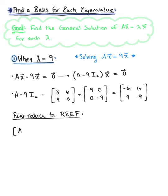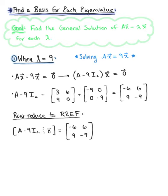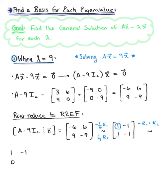To find the basis for this eigenspace, we augment matrix A minus 9 times the identity with the zero vector and row reduce. Multiplying row 1 by 1/6 and row 2 by 1/9 gives the matrix 1, negative 1, 1, negative 1. Then multiplying row 1 by negative 1 and adding to row 2 yields row reduced echelon form: 1, negative 1, 0, 0.